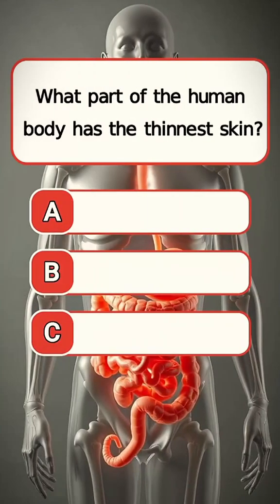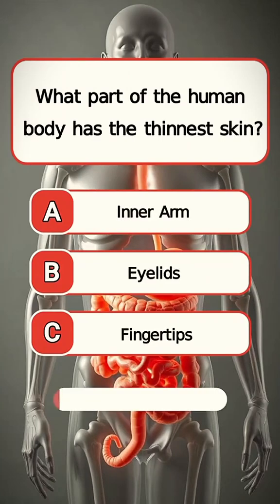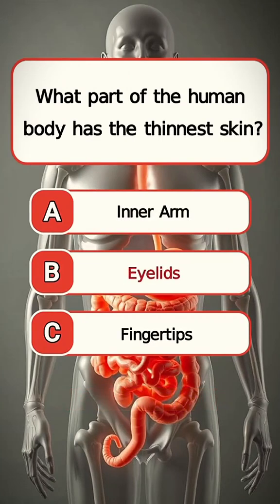What part of the human body has the thinnest skin? Answer B. Eyelids.